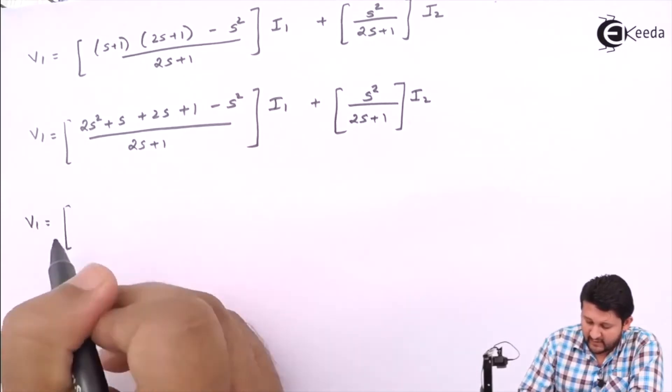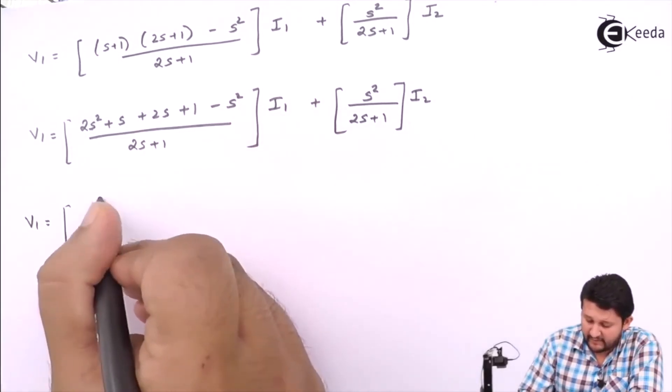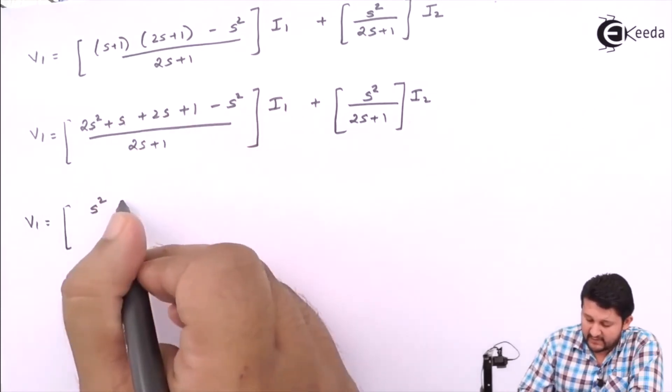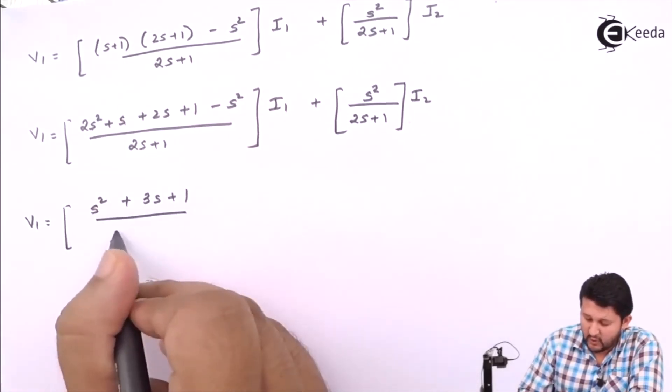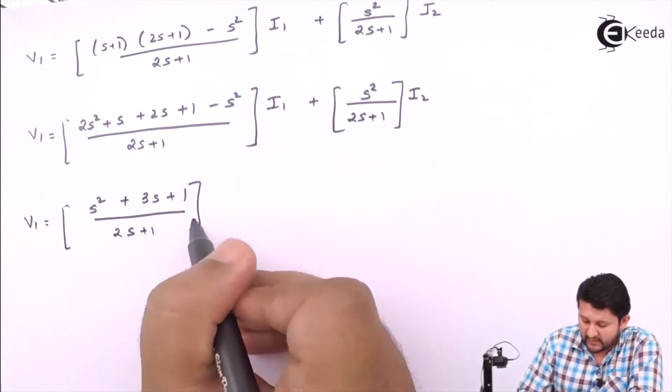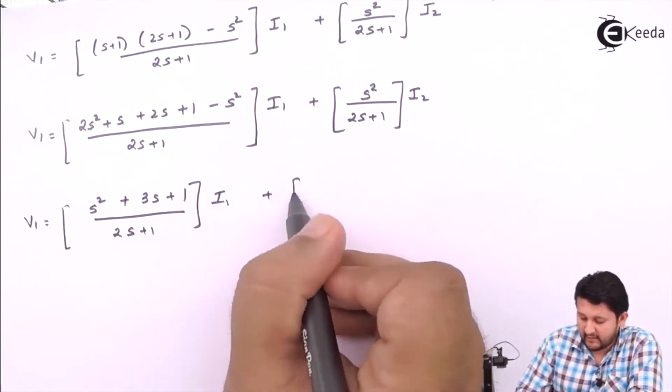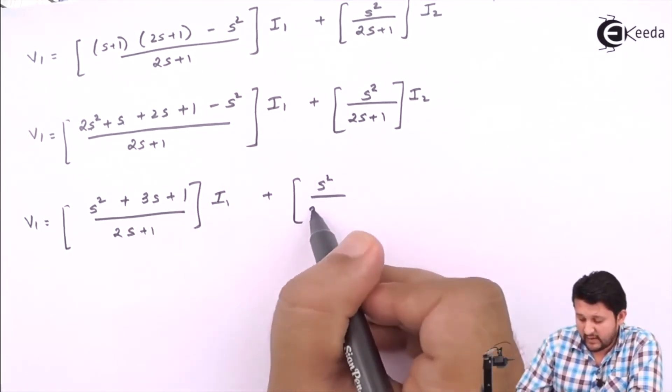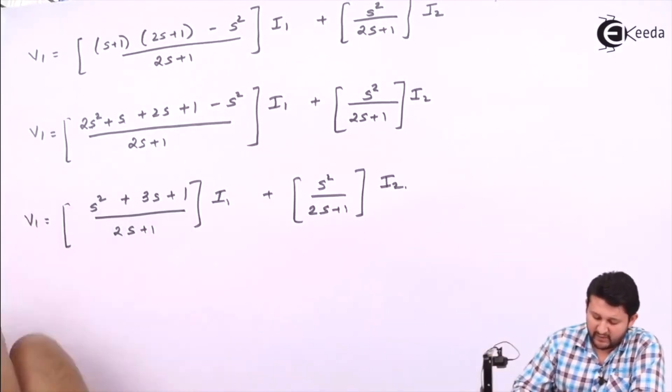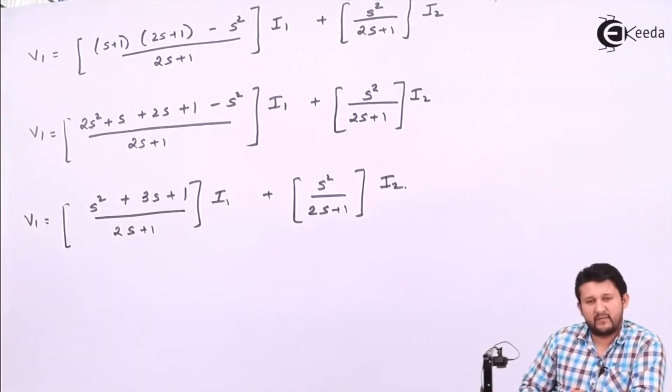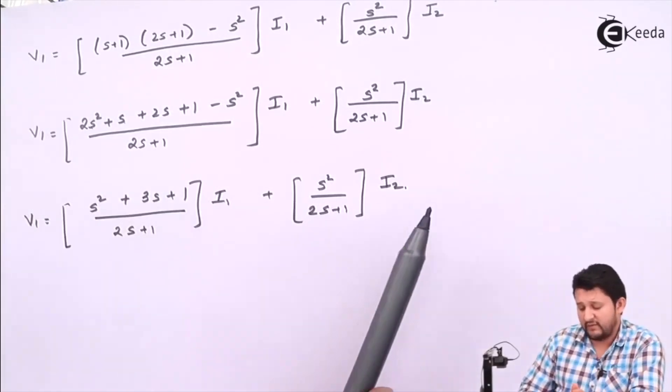So V1 equals [(s+1) cross multiply with (2s+1) minus s²] over (2s+1) times I1, plus s²/(2s+1) times I2. Simplify this term. So V1 equals [2s² + s + 2s + 1 - s²] over (2s+1) times I1 plus s²/(2s+1) times I2.